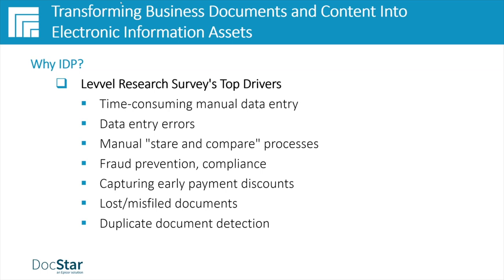Next is data entry errors — humans aren't perfect and can be prone to error, especially under pressure to meet deadlines or distracted by other priorities. Then there's the manual stare-and-compare process, where the same individual responsible for getting data into the system is also responsible for validating that data against another source — such as matching a vendor invoice to a purchase order or an inbound customer PO to line items in a pricing file in the ERP system. Another popular driver is fraud prevention and compliance — taking the human element out of data capture can help adhere to various compliance standards.